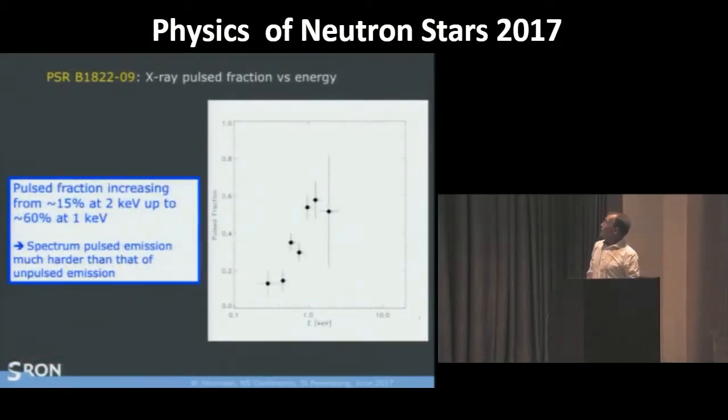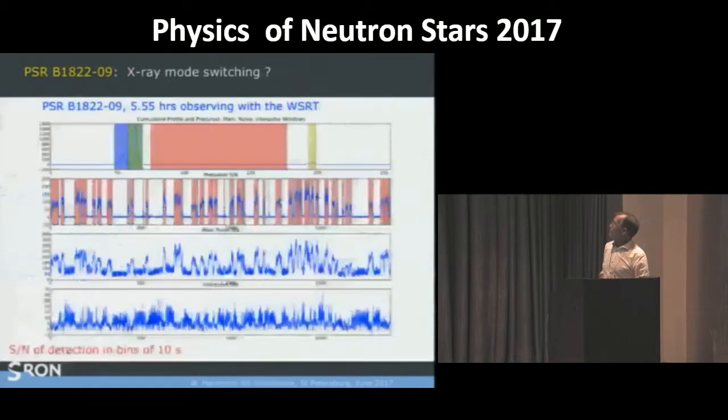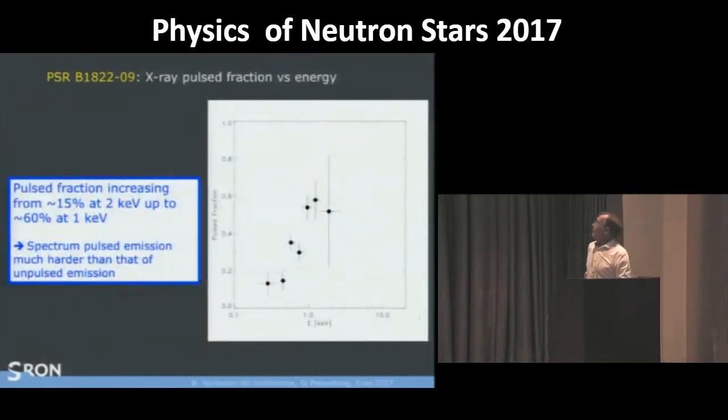When we determine the pulse fraction now as a function of energy, we see that it's getting very high around 1 keV. And it shows that the pulsed emission has a much harder spectrum than the unpulsed emission. But for an orthogonal rotator, when both poles are seen, you should not have, when you have just isotropic thermal emission, such high pulse fractions. That's impossible. In that respect, I will come back to that later. We also think that here also somehow magnetic beaming should play a role or we should have other explanations.